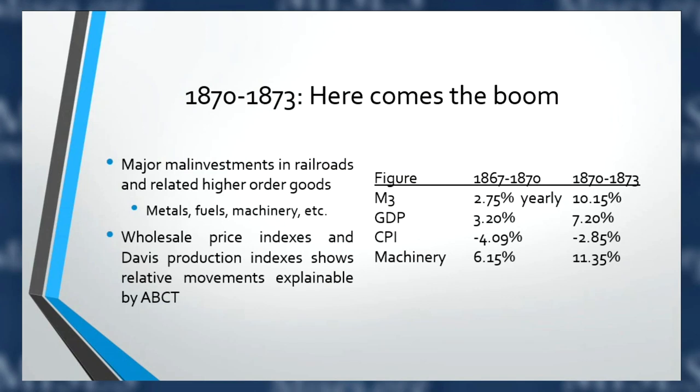This boom was created after the national banking system matured — somewhat similar to the Federal Reserve, created in 1913, which couldn't fully work its magic because of World War I, but then produced the Depression of 1920 to 21 right after. The major malinvestments were in railroads and related higher-order goods: metals, fuels, machinery, and so on. Austrian business cycle theory tells us that lower interest rates increase the present value of long-term production processes in higher orders the most, so businesses are incentivized to embark on those.